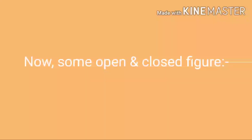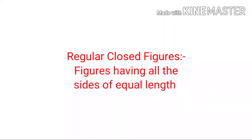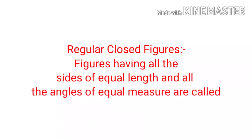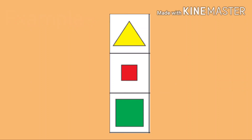Now, some open and closed figures. Look at the following figures — these figures are a combination of open figures and closed figures. Identify which is open and which is closed. Now, regular closed figures: figures having all sides of equal length and all angles of equal measure are called regular closed figures. For example, a square and an equilateral triangle. Regular figures have equal lengths and equal angles.